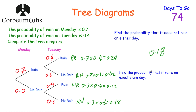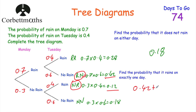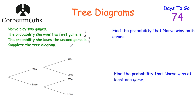Next, find the probability that it rains on exactly one day. That's either rain and no rain (0.42) or no rain and rain (0.12) — not rain and rain (two days), and not no rain and no rain (zero days). So we add: 0.42 + 0.12 = 0.54. The probability of it raining on exactly one day is 0.54.